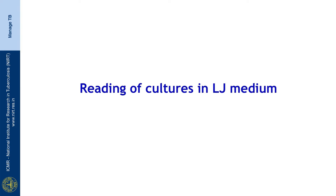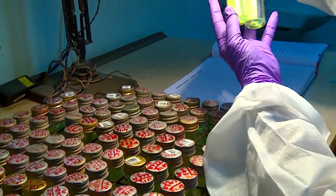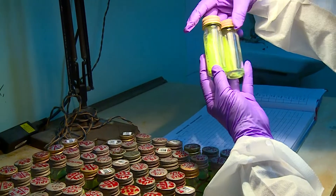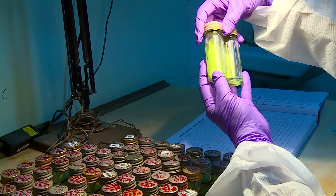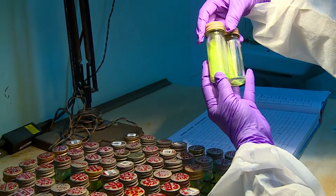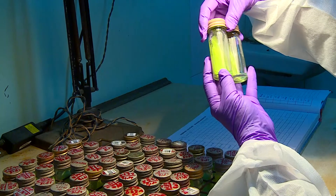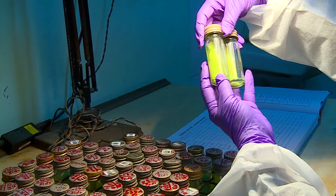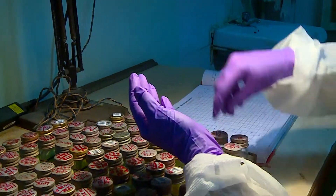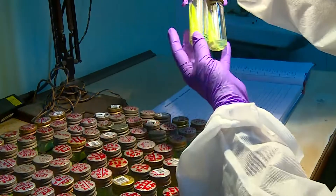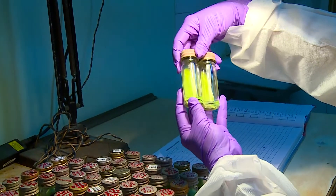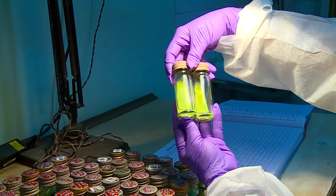We will now be looking at how to read the growth on the culture in the LJ medium. Every week the slopes have to be read for observation of growth, contamination, or if the slopes are negative.